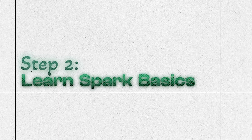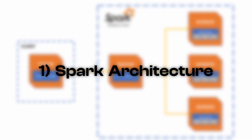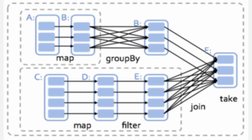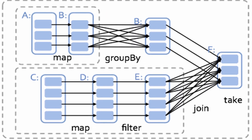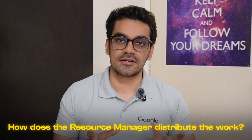Step two is learning the core concepts. A lot of people get lost here because they try to memorize everything about Spark APIs. Here are the key concepts you need. First is distributed computing — how does Spark split a giant 100 GB file across 10 different computers to work on it in parallel? This includes understanding worker nodes versus driver nodes, how a resource manager distributes work, how caching, memory, and cores work for each node, and how nodes communicate with each other.